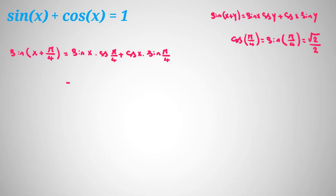And here we can say it equals sin x, replace cos pi over 4 with root 2 over 2, plus cos x times sin pi over 4 which is root 2 over 2. If we factor out root 2 over 2, it will be sin x plus cos x.